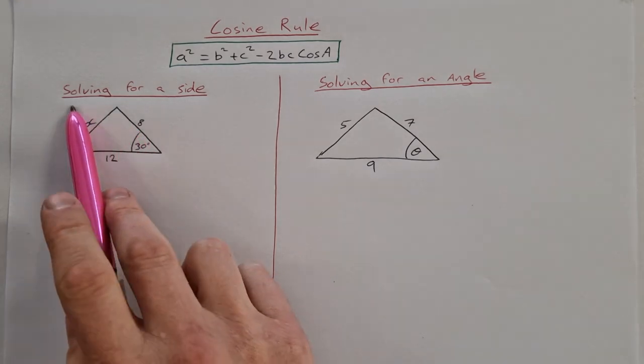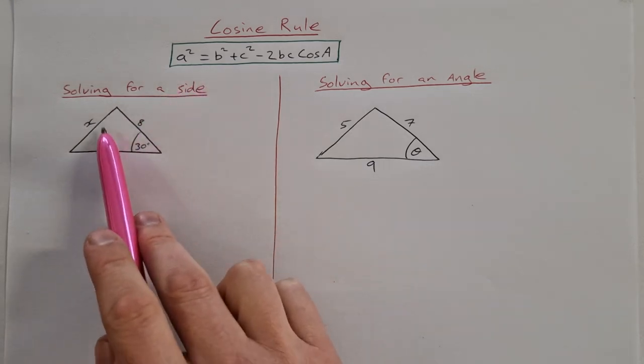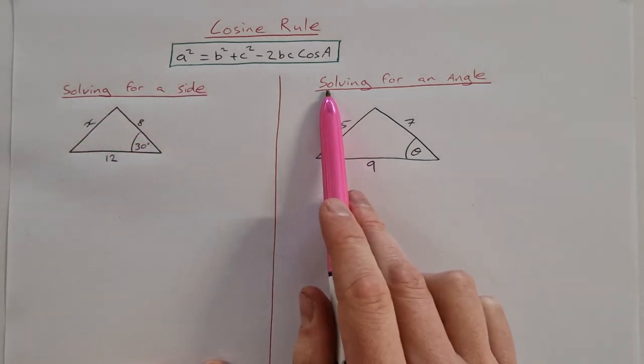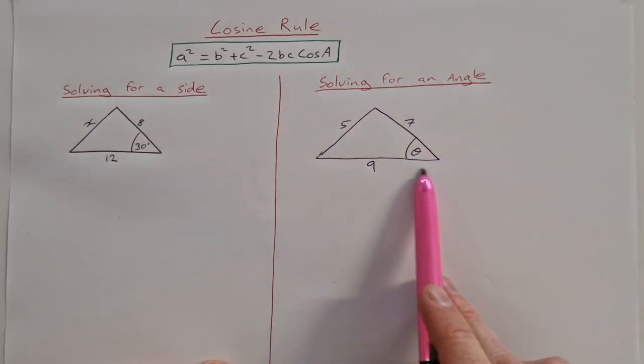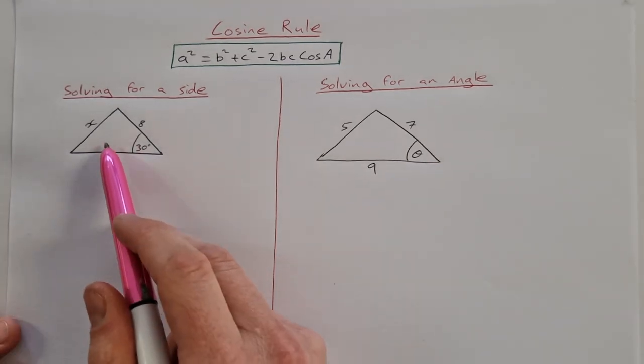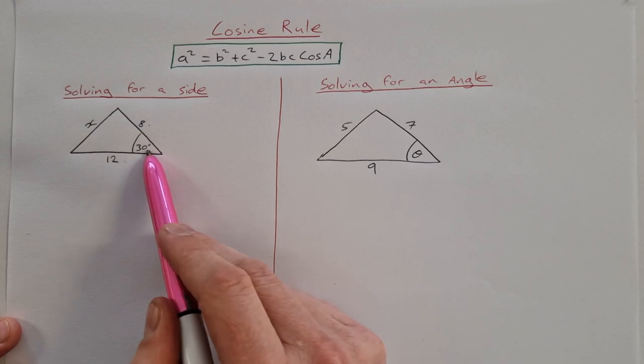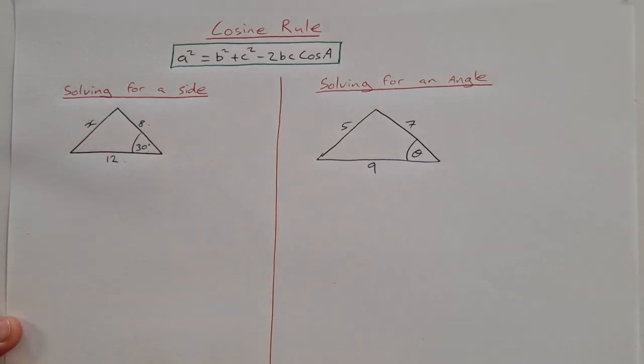I'm going to look at an example where we're solving for a side like this one and an example where we're solving for an angle like this one. So solving for a side, it's important that you have two sides and the angle between them then you can solve for the third side.